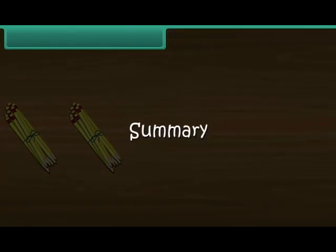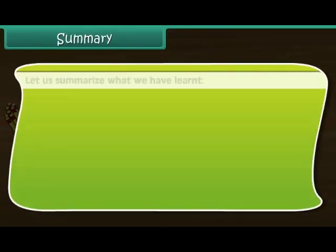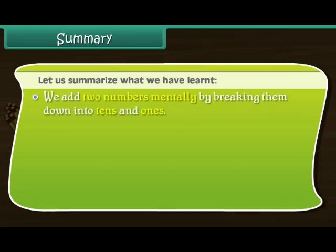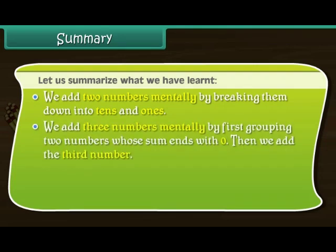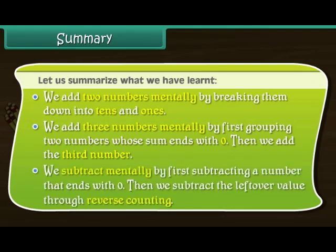Let us summarize what we have learned. We add two numbers mentally by breaking them down into tens and ones. We add three numbers mentally by first grouping two numbers whose sum ends with 0, then we add the third number. We subtract mentally by first subtracting a number that ends with 0, then we subtract the leftover value through reverse counting.